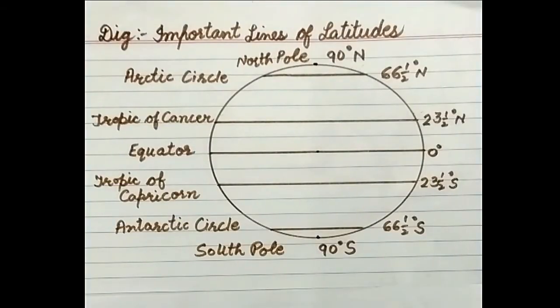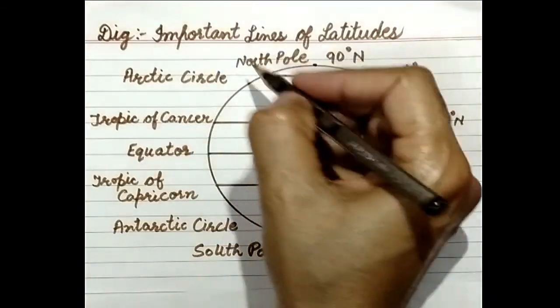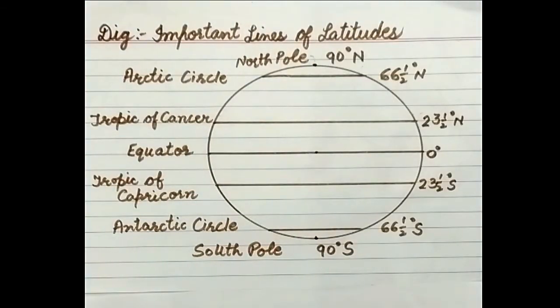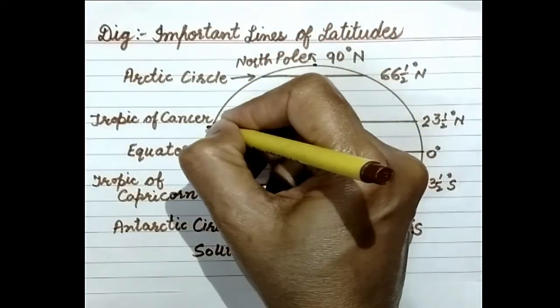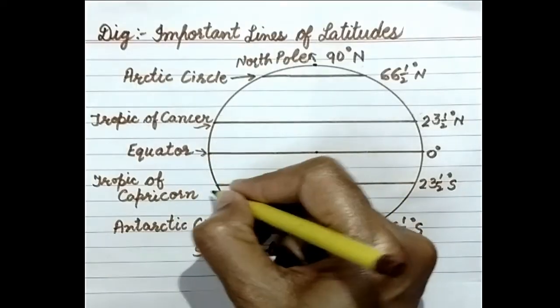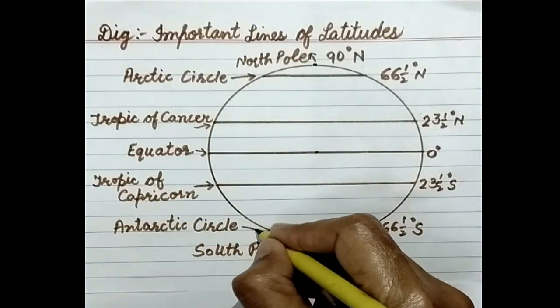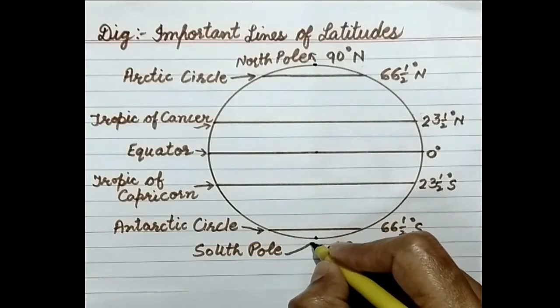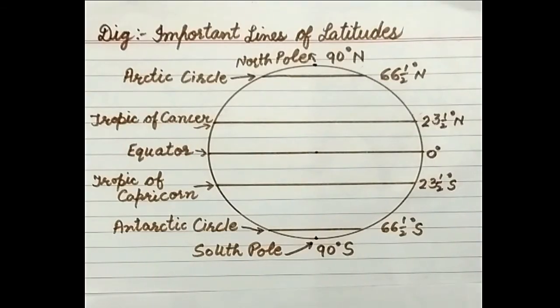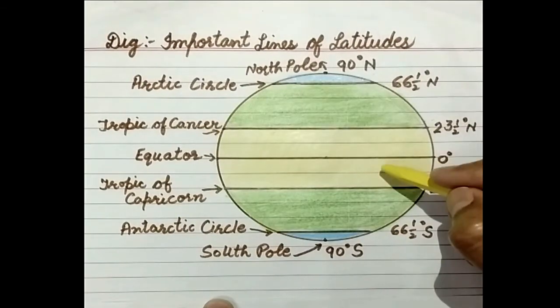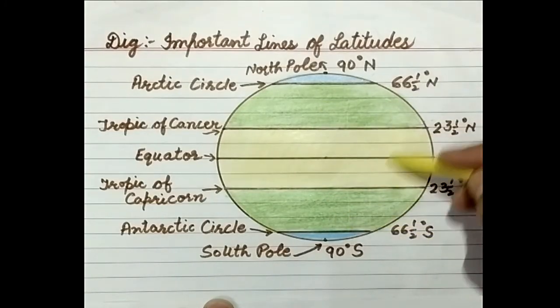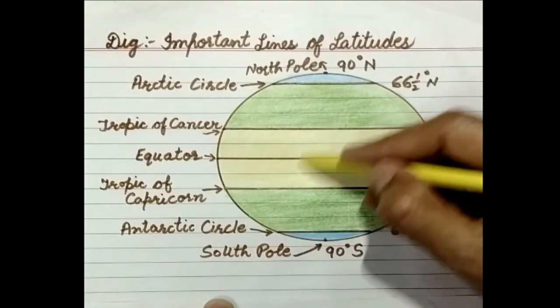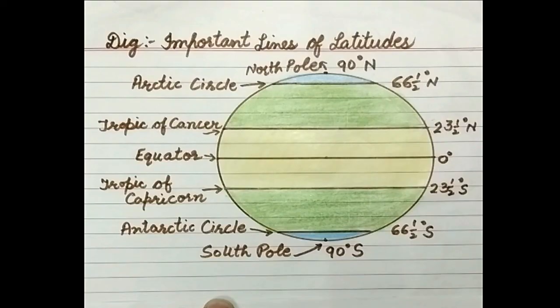Later on you can show with the help of arrows. This is the North Pole, this is the Arctic Circle, Tropic of Cancer, Equator, Tropic of Capricorn, Antarctic Circle, and South Pole. This is the diagram of important lines of latitude. You can fill colors also. I have filled colors here - green in the polar areas and yellow near the equator. I hope it will be clear to you all. Thank you.